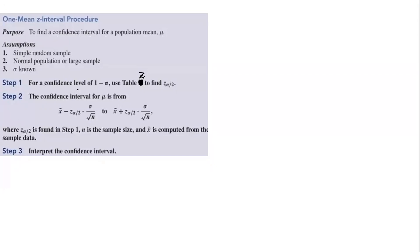There are three steps. Step number one, for a confidence level of 1-alpha, we use z-table to find z-alpha-by-2. Step number two, the confidence interval for mu is from x-bar minus z-alpha-by-2 times sigma over square root of n to x-bar plus z-alpha-by-2 times sigma over square root of n. Where x-bar is the sample mean, sigma is the population standard deviation, and n is the sample size.